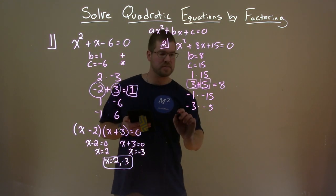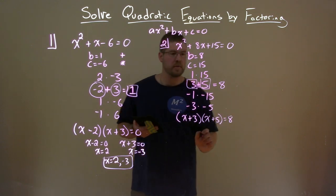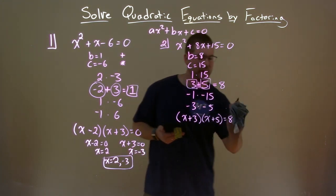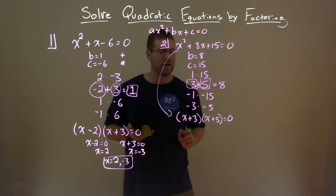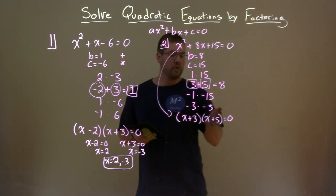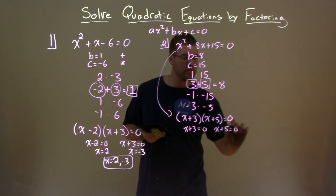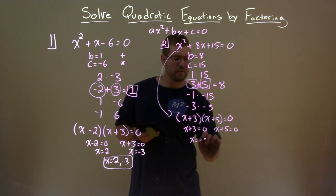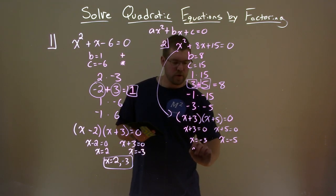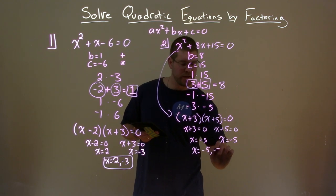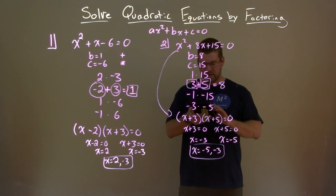We factor this as x plus 3 times x plus 5 equals zero. Setting both parts equal to zero: x plus 3 equals zero, and x plus 5 equals zero. Subtracting 3 gives x equals negative 3. Subtracting 5 gives x equals negative 5. So our two solutions are x equals negative 5 and negative 3.